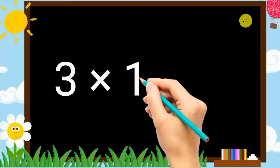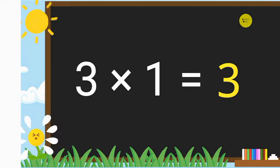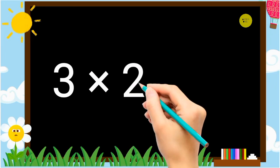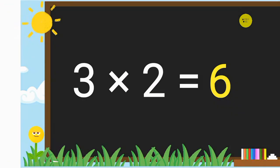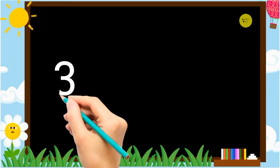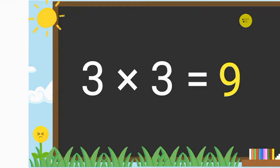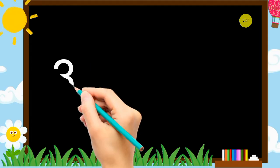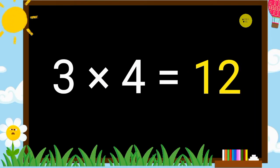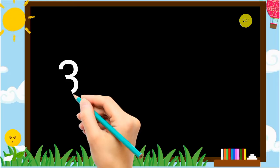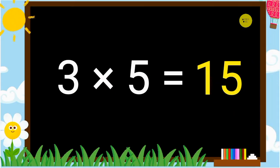3 1's a 3. 3 2's a 6. 3 3's a 9. 3 4's a 12. 3 5's a 15.